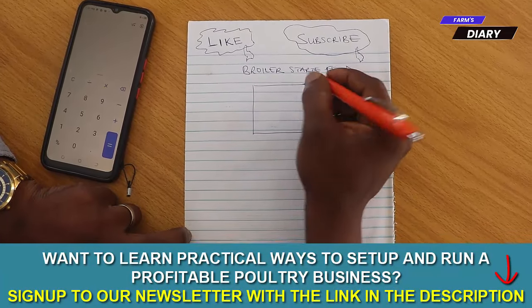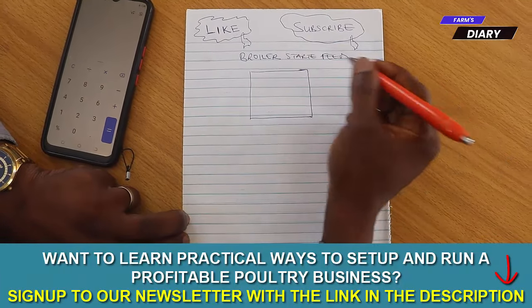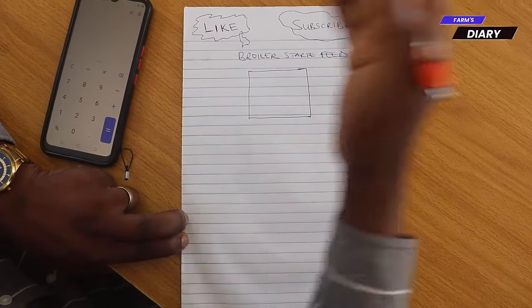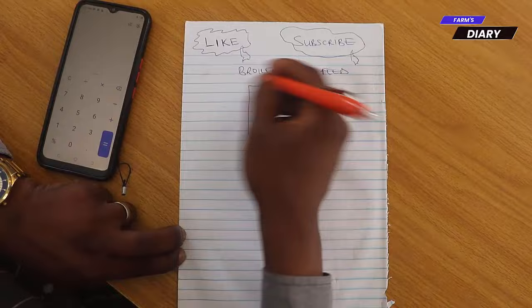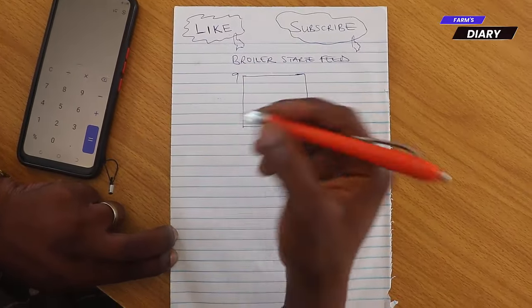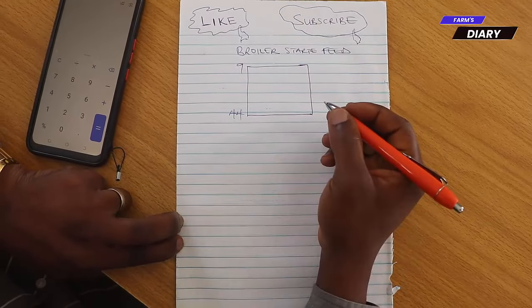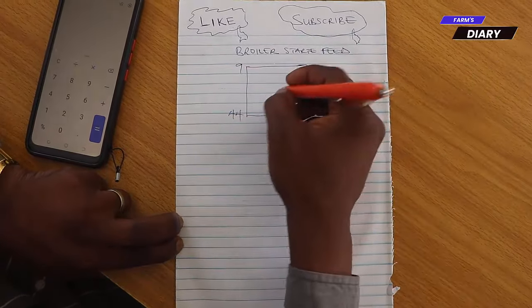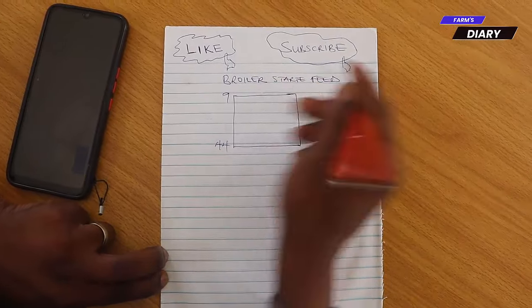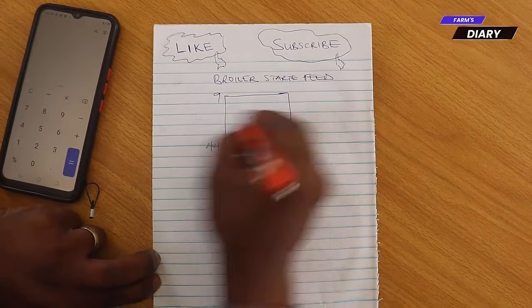And that Pearson method, we always consider the source of the energy and the crude protein. So, for instance, if you have nine from your corn and from your soya meal, soya meal most of the time is corn with 44% crude protein to 46%. So you now put what you want to get. If it is, for instance, in the starter feed, you always have about 23% crude protein.